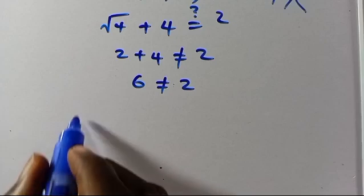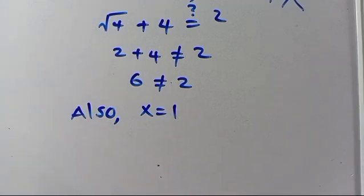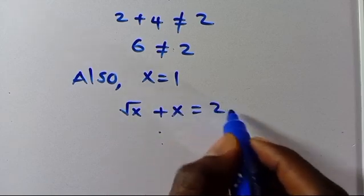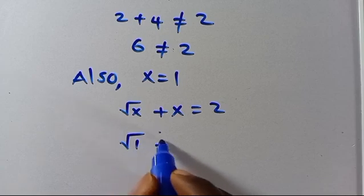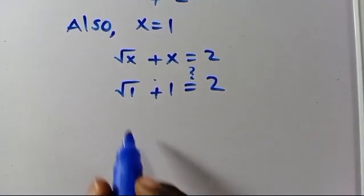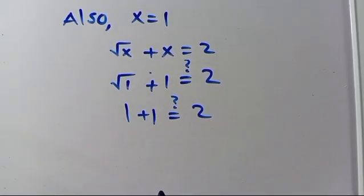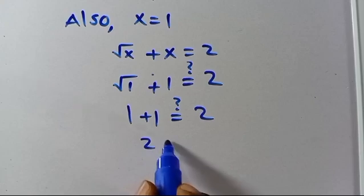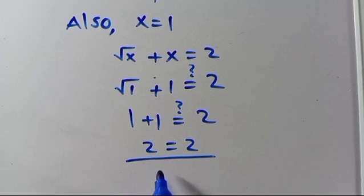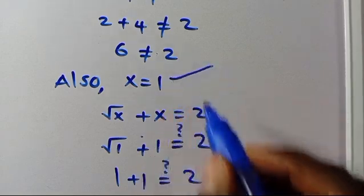Now let's check x equals 1. Recall we have root x plus x equals 2. Substituting, root 1 plus 1: root 1 is 1, so 1 plus 1 equals 2. The left-hand side equals the right-hand side. So x equals 1 is correct.